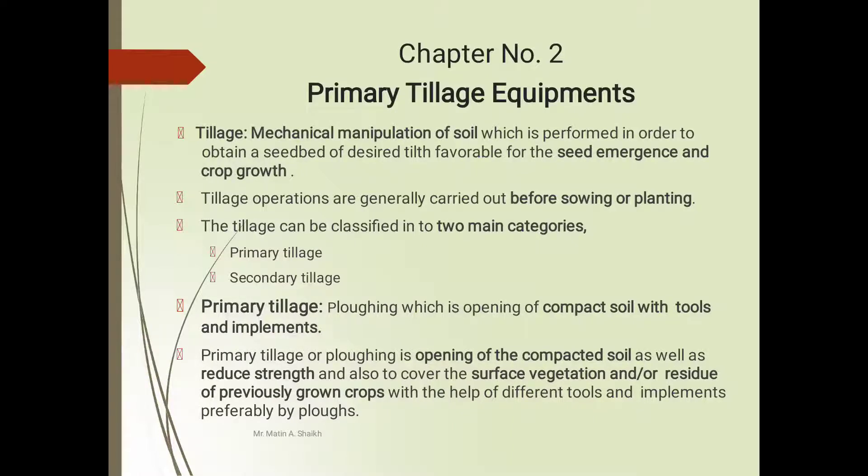Tillage can be classified in two main categories: primary tillage and secondary tillage. Primary tillage is ploughing which is opening of compact soil with tools and implements. Primary tillage or ploughing is opening of compacted soil as well as reducing strength and also covering the surface vegetation and/or residue of previously grown crops with the help of different tools and implements, preferably by ploughs.